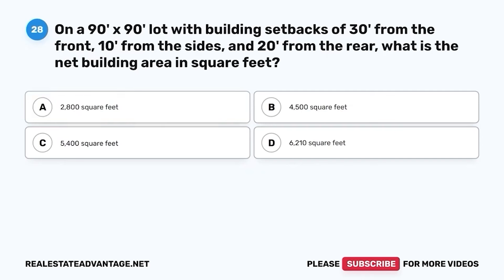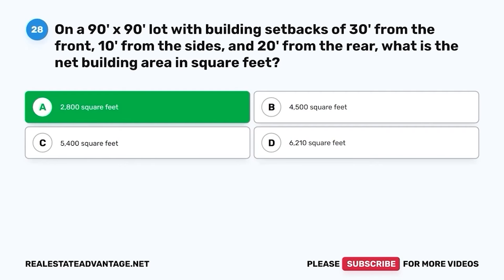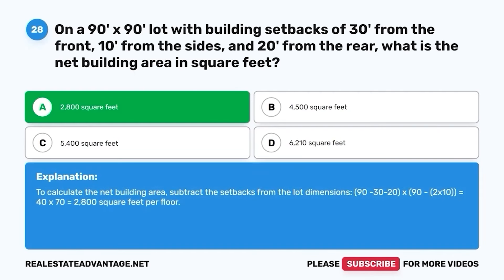Question 28. On a 90 feet by 90 feet lot, with building setbacks of 30 feet from the front, 10 feet from the sides, and 20 feet from the rear, what is the net building area in square feet? A. 2,800 square feet. B. 4,500 square feet. C. 5,400 square feet. D. 6,210 square feet. The correct answer is A. 2,800 square feet. To calculate the net building area, subtract the setbacks from the lot dimensions: 90 minus 30 minus 20, times 90 minus 2 times 10, equals 40 times 70, equals 2,800 square feet.